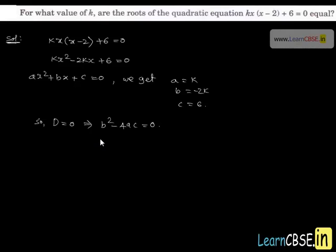Let us substitute the above values in b²-4ac=0. We get (-2k)²-4(k)(6)=0.